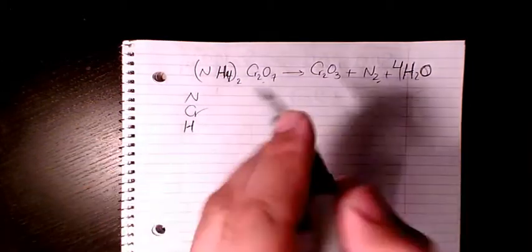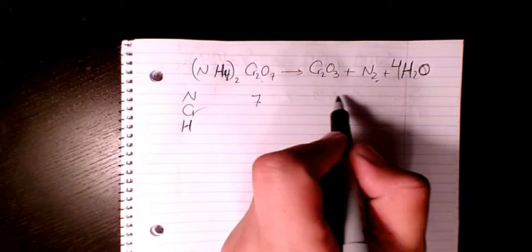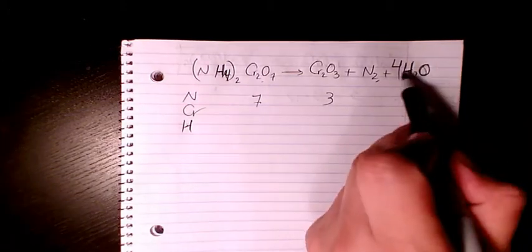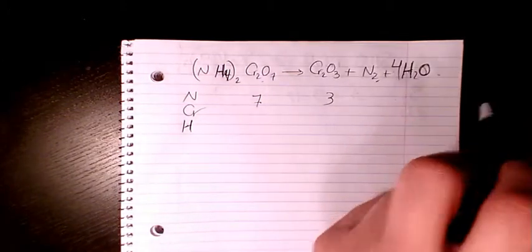What about oxygen? Oxygen, we have seven of them here. We have three of them here and we have four of them here. So three plus four, seven.